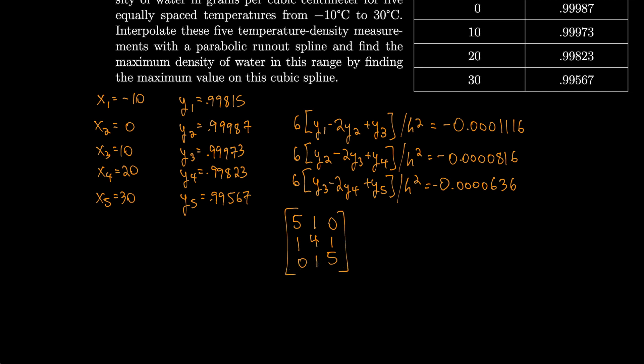So we'll take this matrix and we'll multiply that by m2, m3, m4, and set it equal to the values that we just computed, -0.000116, -0.000816, and -0.000636.